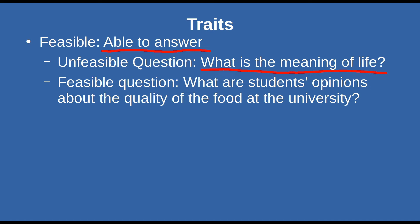A more feasible research question would be: what are students' opinions about the quality of the food at the university? This is much more within the range of the typical student's ability to answer — make a survey, ask some questions about food quality, use a Likert scale. Very doable, very feasible. Feasibility is a subjective term and not everyone will agree, but you need to be aware of it, and you'll be hard-pressed to find someone who disagrees with that.